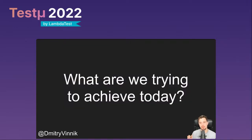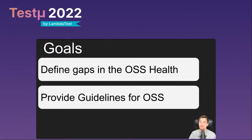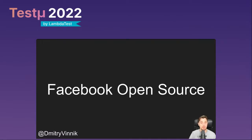For this presentation, what are we trying to achieve? Our goal is defining gaps in open source project health and providing some guidelines. I don't believe in dogmatism or step-by-step instructions — every project is different. I'll give guidelines you can follow, and more importantly, the one thing that will be clear throughout this whole presentation is that communication is the key at every step.